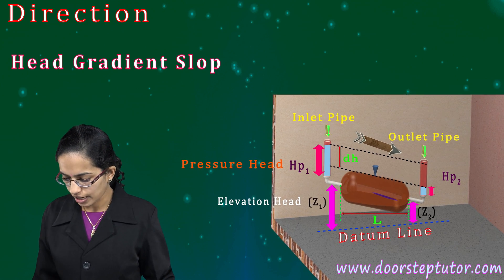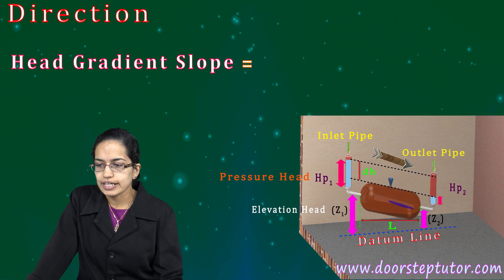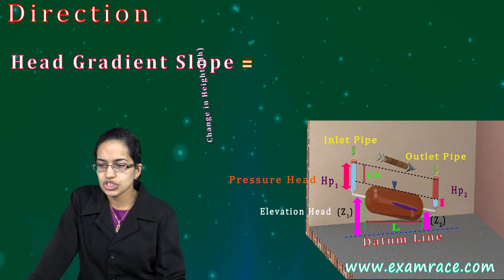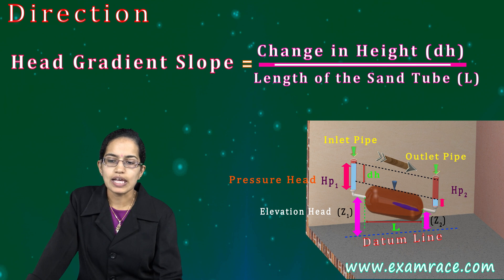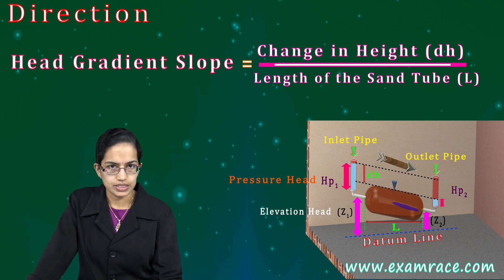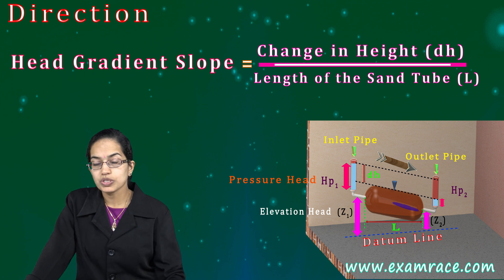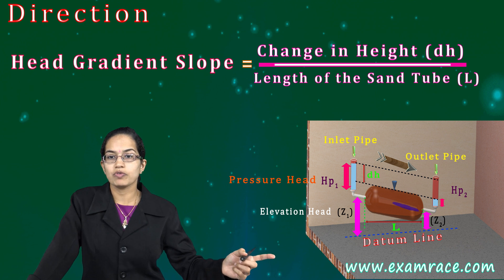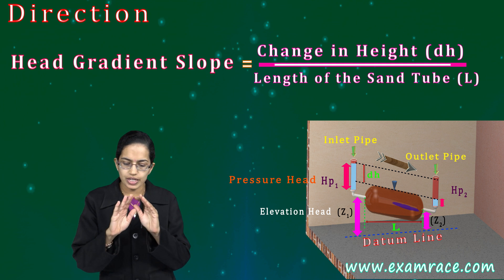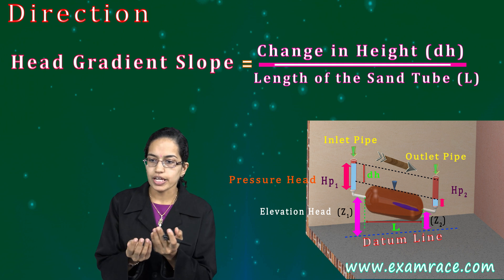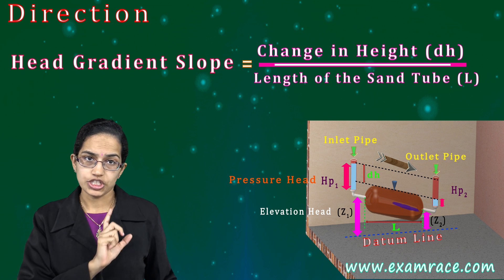The head gradient is calculated as the change in height divided by the length of the sand tube. This is something we use later when discussing the amount of flow as well, and it is a fundamental way to understand the direction of flow.